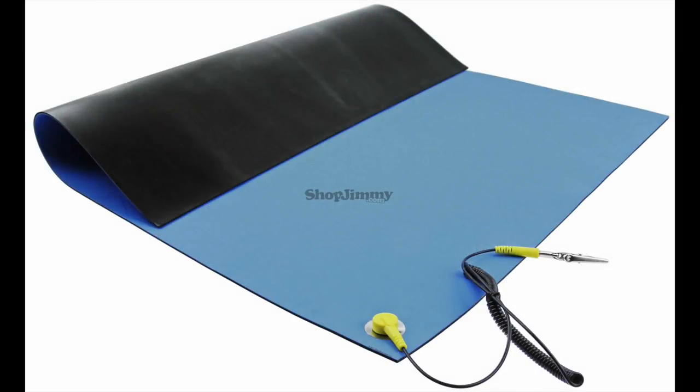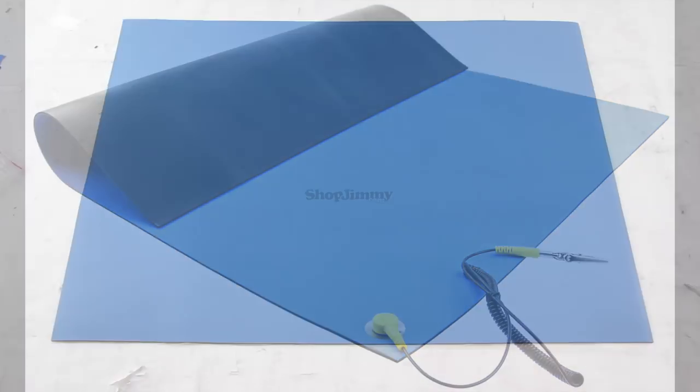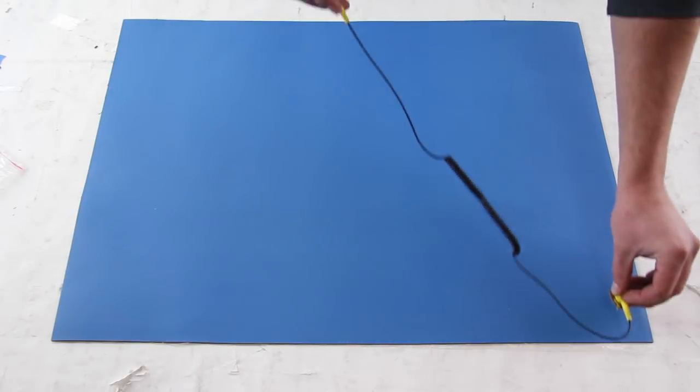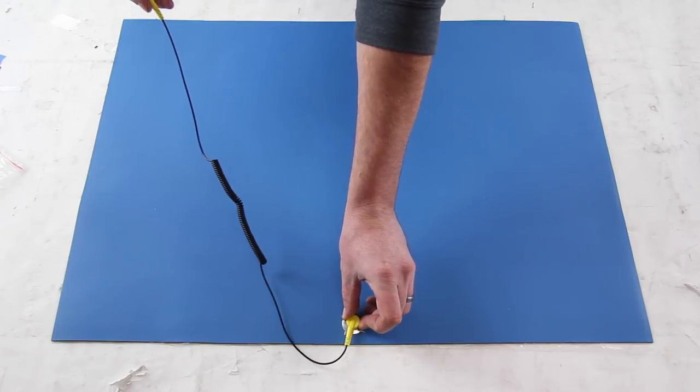In this video we will show how to install the grounding grommet to the electrostatic discharge mat. The ESD mat prevents electrostatic shock from damaging electronic components. The mat comes without the grommet installed so it can be installed wherever you would like.